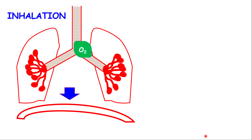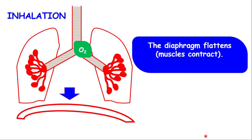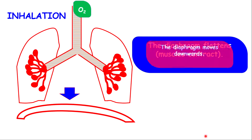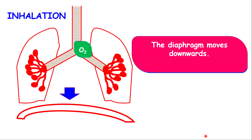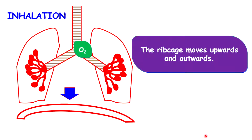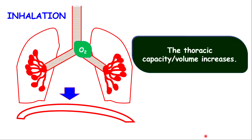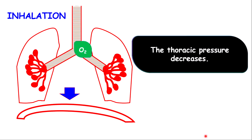During inhalation, a number of things are happening. The diaphragm flattens because the muscles of the diaphragm contract. The diaphragm also moves downward. The intercostal muscles contract. The ribcage moves upwards and outwards. The purpose of this is to increase the thoracic volume or capacity, so the thoracic volume increases because you're taking in more air. The thoracic pressure is also decreased.